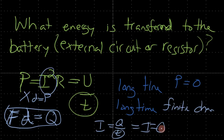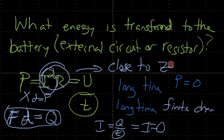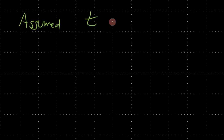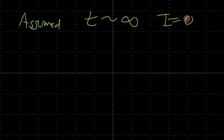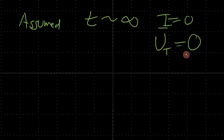So if time is approximately infinity, current equals zero, which means the energy transferred to the battery — call it U_T — is approximately zero. However, what if the time is less than infinity, and also much less than any resonant frequency? We can then assume the strain is constant and there are no mechanical resonance phenomena happening.